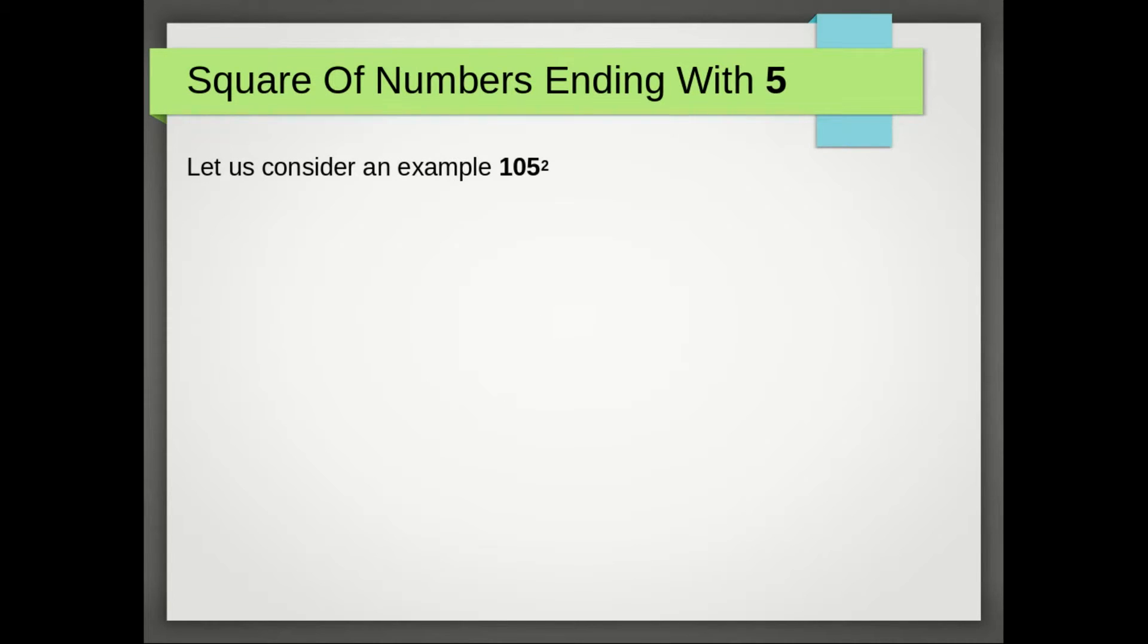Square of numbers ending with 5. Let us consider an example: 105 square. First step: remove last digit 5 from the given number.